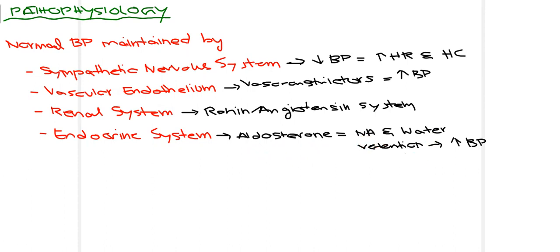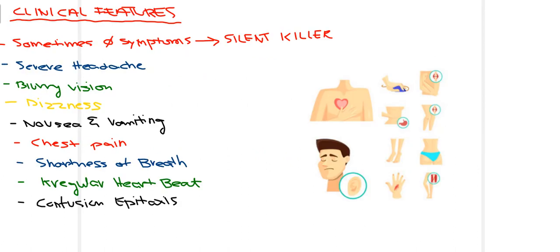When a patient is suspected of suffering from hypertension, there are certain clinical features the doctor looks for. The most dangerous symptom is actually having no symptoms — that is why hypertension is known as a 'silent killer.' Patients above 40 should regularly have their blood pressure checked. Visible signs and symptoms include severe headache, blurry vision, dizziness, nausea and vomiting, chest pain, and shortness of breath.